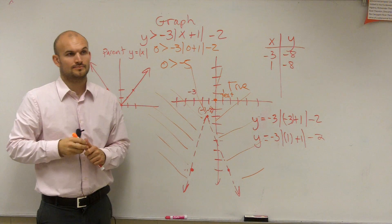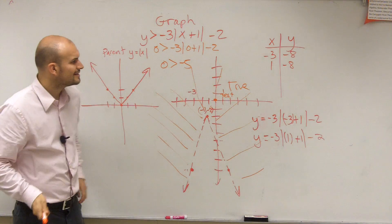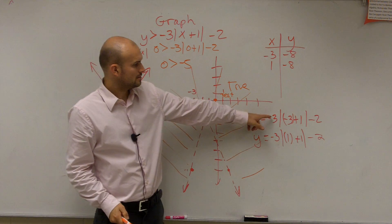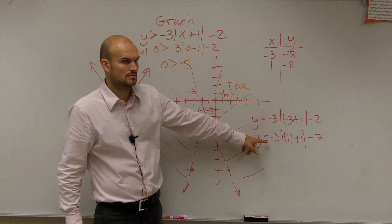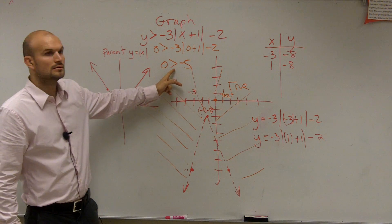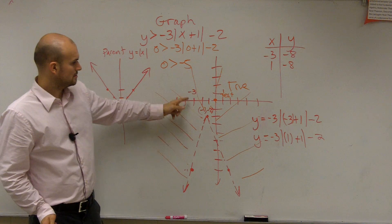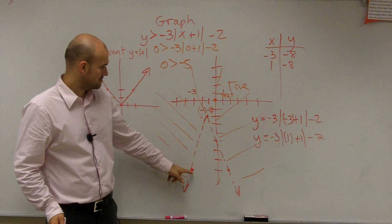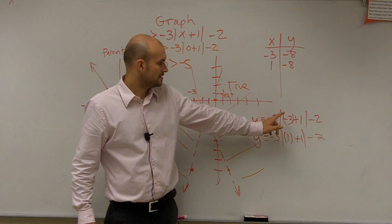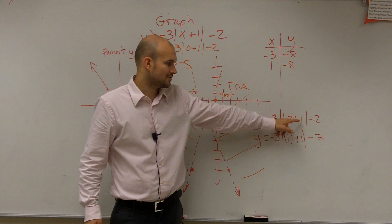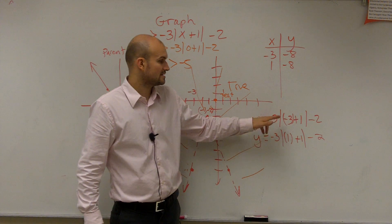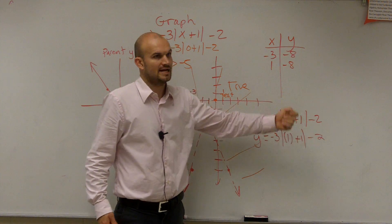I didn't get negative 8 for the test point. I got negative 5. Where did that thing go down on your graph? How did I get that? I did right here. I plugged in negative 3. So negative 3 plus 1 is negative 2, absolute value of negative 2 is 2, 2 times negative 3 is negative 6, negative 6 minus 2 is negative 8.